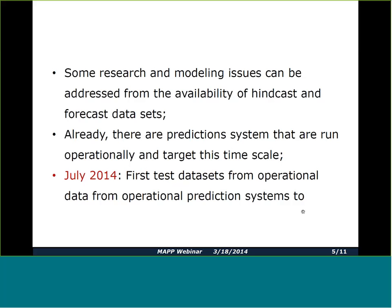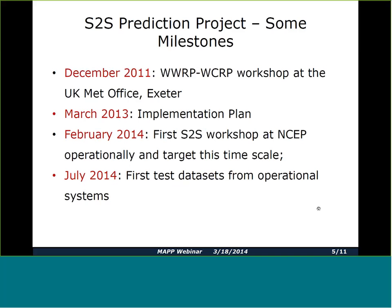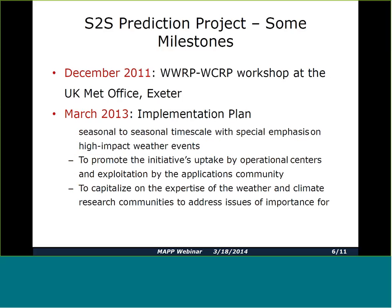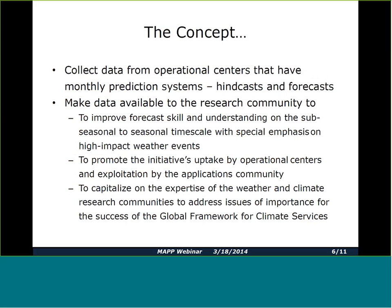Something very similar is also happening over the U.S. as part of the North American multi-model experiments. Some milestones: there was a first workshop which led to this project in 2011. The implementation plan is ready and posted on the web. Last month we hosted the first S2S workshop at NCEP, supported by the CPO MAP program, and it happened during a snow event which created logistical issues. The first dataset submissions should start to appear by 2014.